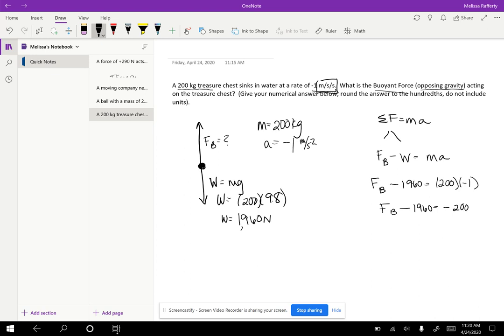And then last step to get buoyant force by itself. To solve for it, we add 1960 to cancel it out over here. So plus 1960. That cancels. So we're left with buoyant equals 1960 plus a negative 200 which gives me a positive 1760, 1760 newtons. So that makes sense. If we plug in 1760 over here, it's slightly smaller than the weight. So that's why the treasure chest is accelerating downward.